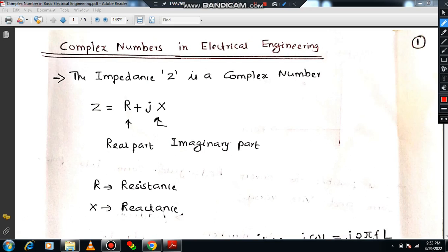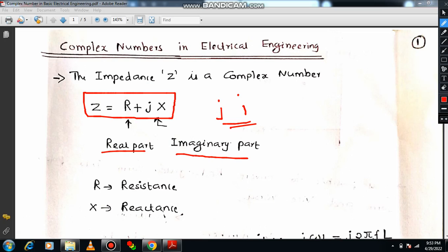The impedance can be represented by a complex number. So impedance is given by R plus J into X. You can use either J or I, both are complex operators. We can say that the impedance comprises of both real part and imaginary part. Z equals R plus J into X. Here R is resistance and X is known as reactance.